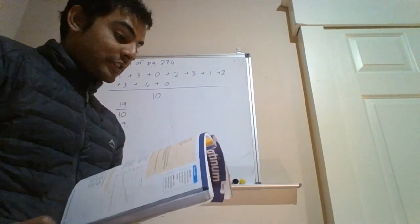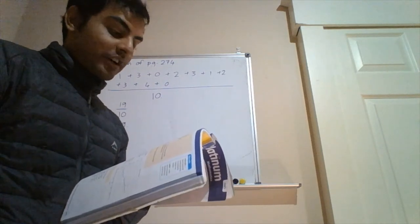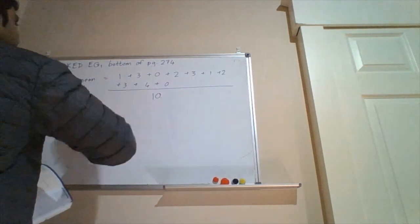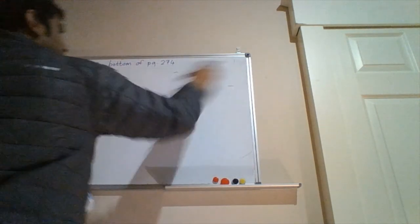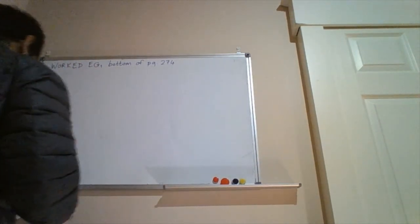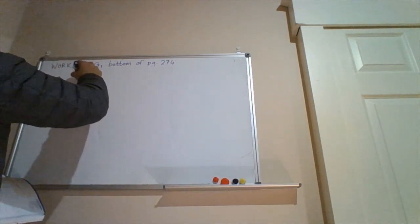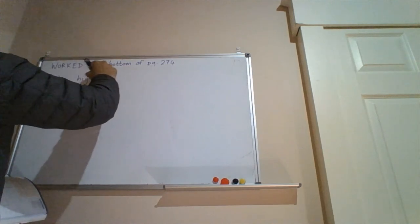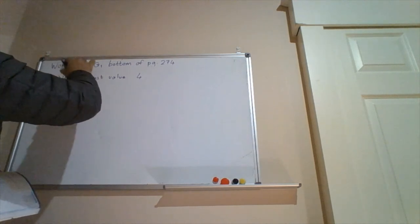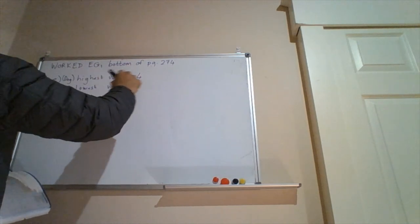So next we go on to E and that's asking us to find the extremes for the dog data values. So extremes means highest and lowest. So the dog data values have a highest value of four and a lowest value of zero.